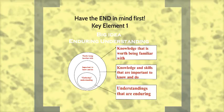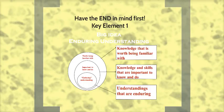An enduring understanding, or EU as it is often called, is a sentence or two that offers a particular proposition about a big idea. A good EU is characterized as one that includes being enduring, being a big idea, having lasting value beyond the classroom, a core process or idea at the heart of a discipline, abstract, being counterintuitive, and often having misunderstood concepts. Whatever an enduring understanding is, it is embedded in facts, skills, and activities that can be lifelong.